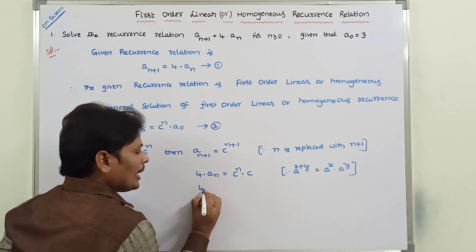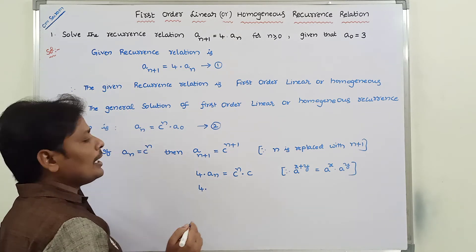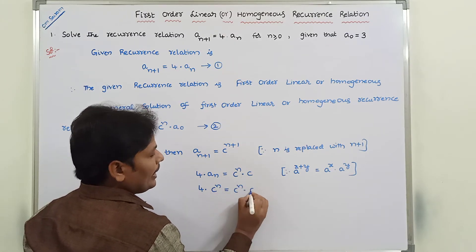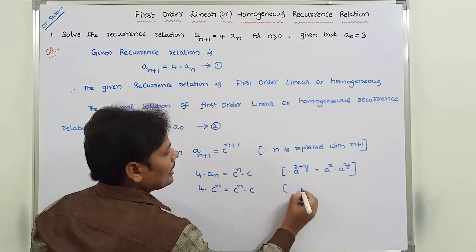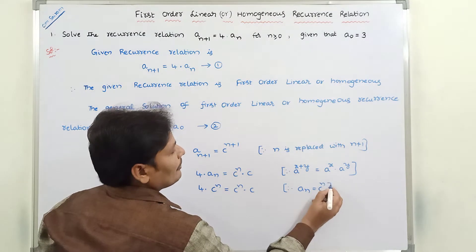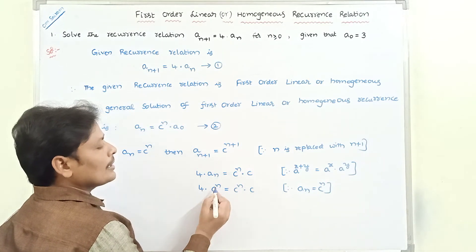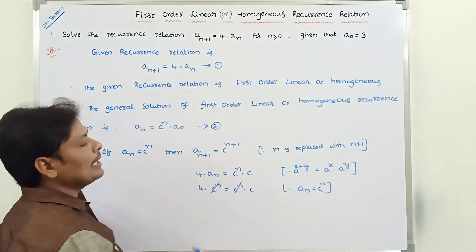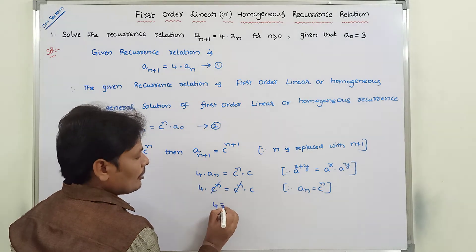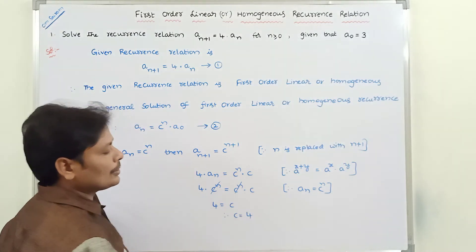So 4 · a(n) is nothing but c^n. Therefore, 4 · c^n = c^n · c. Since a(n) = c^n, both sides have c^n. We cancel c^n on both sides. Therefore 4 = c, so c = 4.